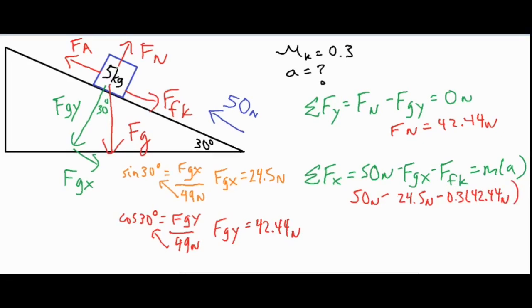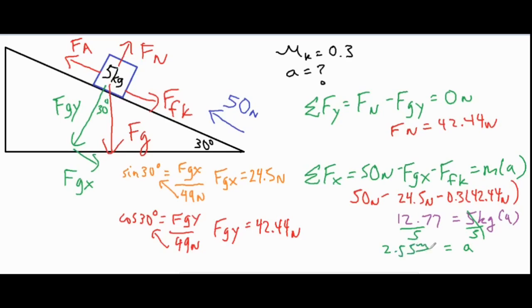After combining those three numbers we get 12.77, and that equals five kilograms times acceleration. Dividing both sides by five leaves us with 2.55 meters per second squared as our final acceleration.